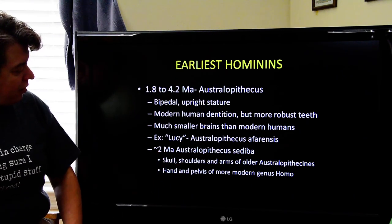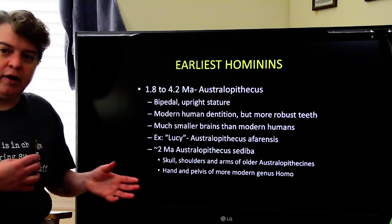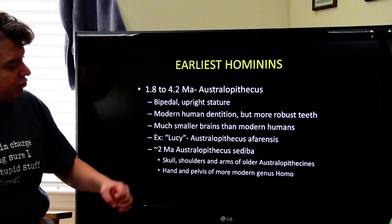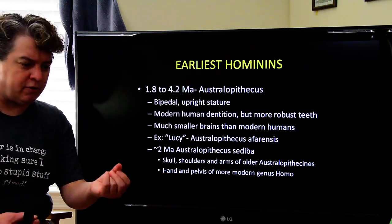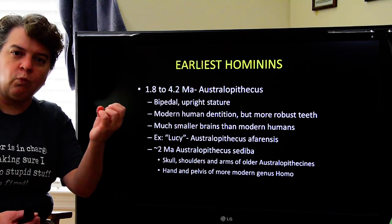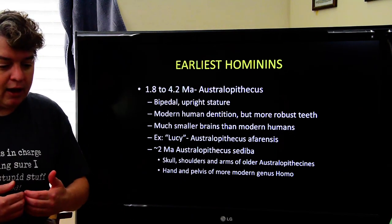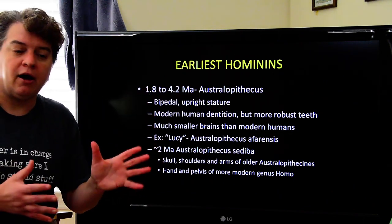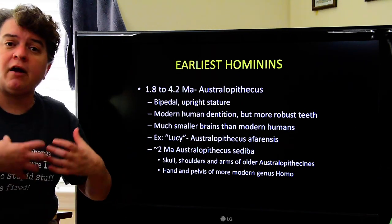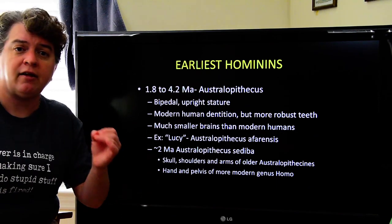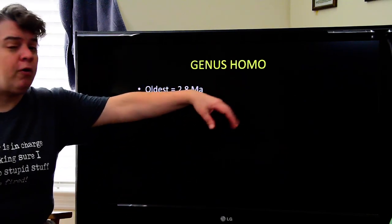There is another australopithecine from about two million years ago called Australopithecus sediba. It's a mix of older and newer hominid characteristics — the skull, shoulders, and arms look like the older ones, but the hand and pelvis look more modern, suggesting it could carry out more intricate work with its hands. As Africa dried out and hominids moved out of disappearing forests into emerging grasslands, natural selection was favoring characteristics better suited to inhabiting those savannahs.